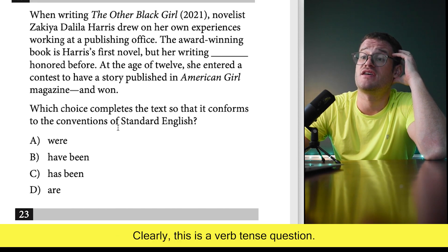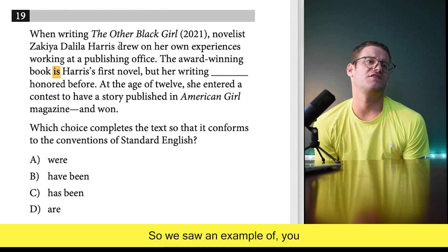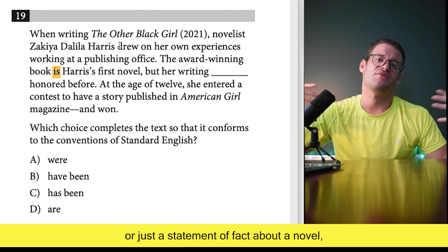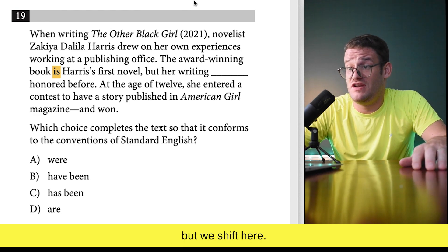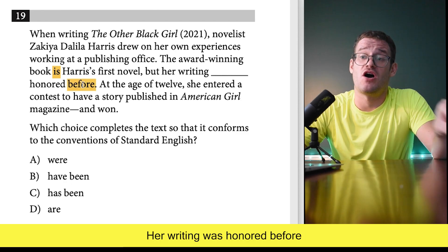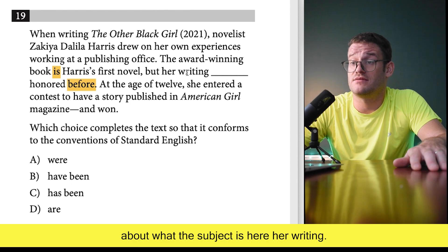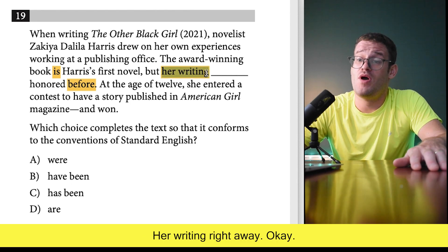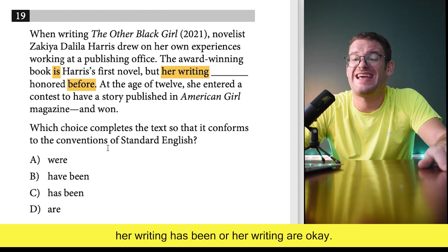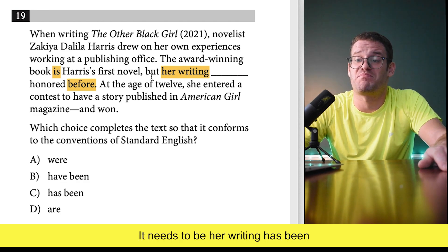Once again we look at our answer choices — clearly this is a verb tense question. 'The award-winning book is' — that's a present tense statement of fact about the novel. But we shift: 'but her writing blank honored before.' We have 'before' here, so it's got to be past tense. The subject is 'her writing' — singular. So it cannot be 'were,' which is a plural conjugation. We're between 'were,' 'have been,' or 'has been.' Because it's singular, it must be 'her writing has been honored before.'